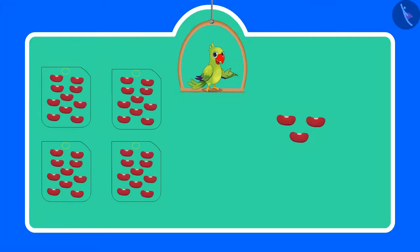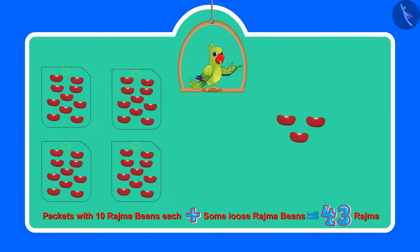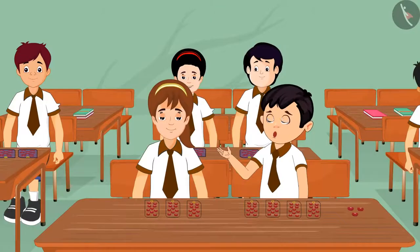Today the teacher asked all the children to get rajma beans and some small packets from home. They have to show 43 rajma beans with the help of sets of 10 rajma beans and some loose rajma beans. Aarti, we will have a lot of fun today. See, I have 4 packets with the rajma beans. How many packets have you made?